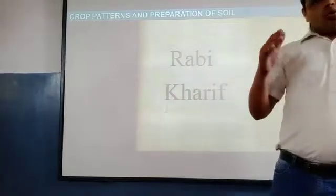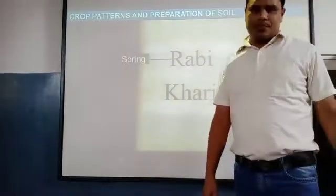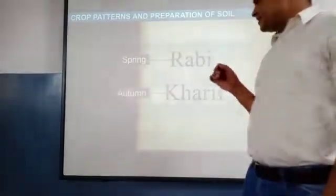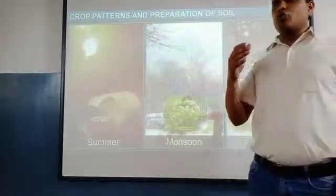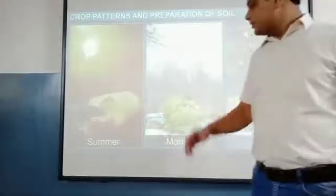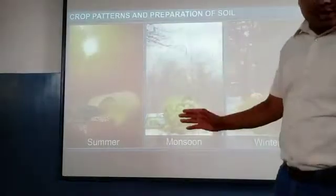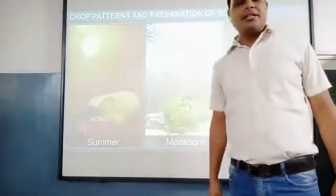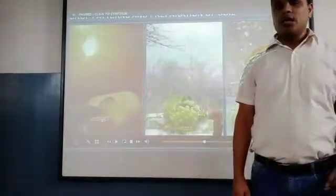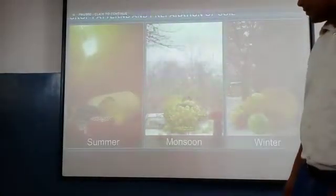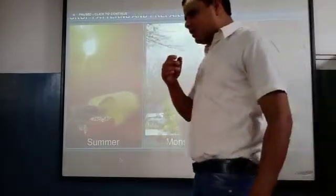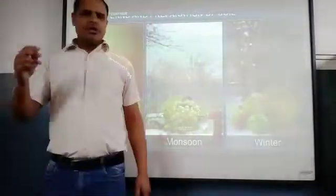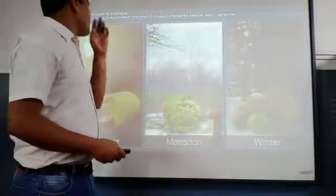One more category of crops is also there, known as Zaid crops. Kharif crops are grown in the rainy season, Rabi crops are grown in the winter season, and Zaid crops are grown in the summer season. We have three seasons — summer, monsoon, and winter — and in all these seasons we grow different types of crops.